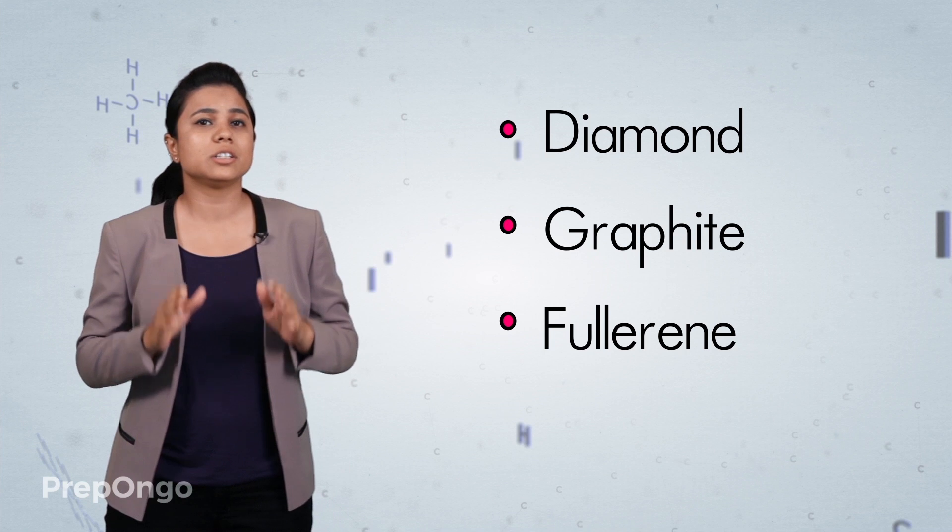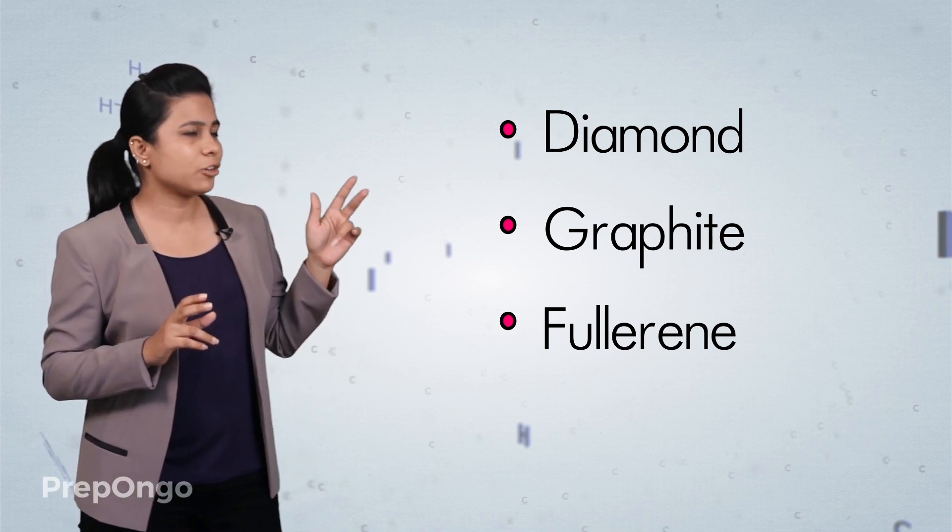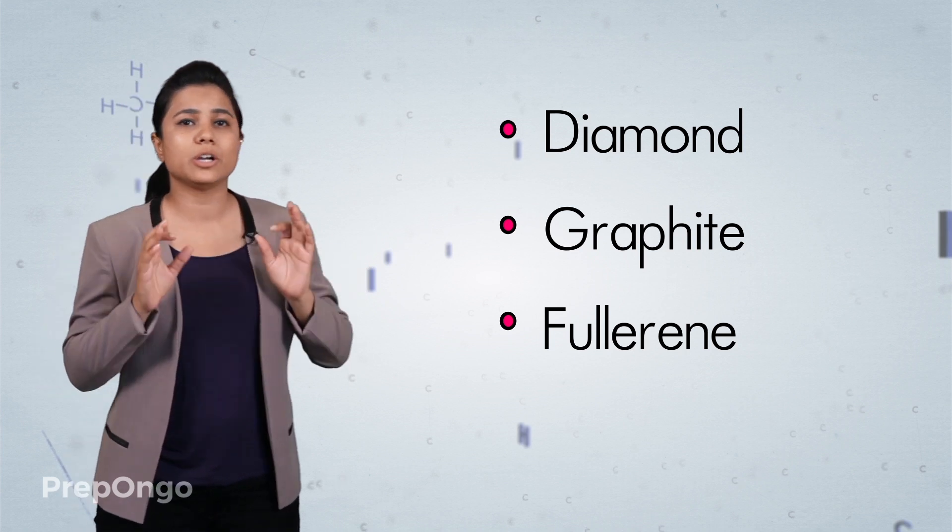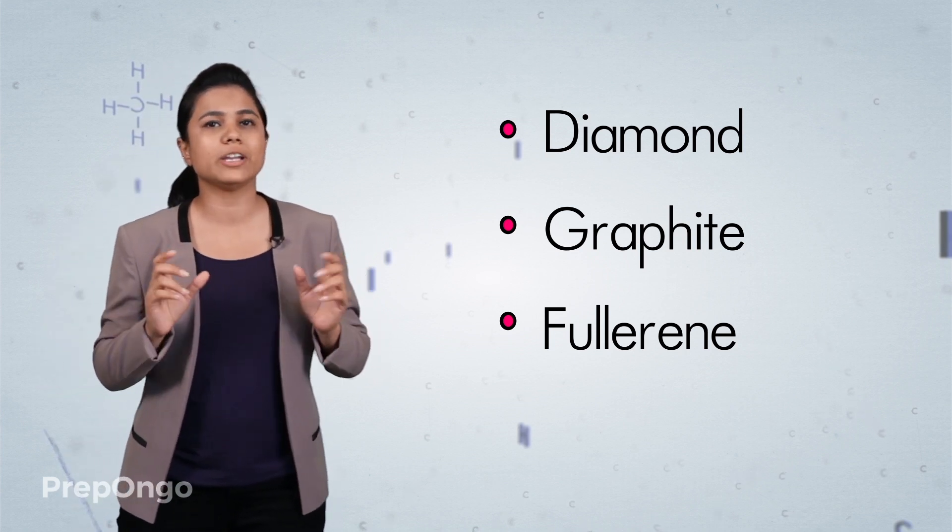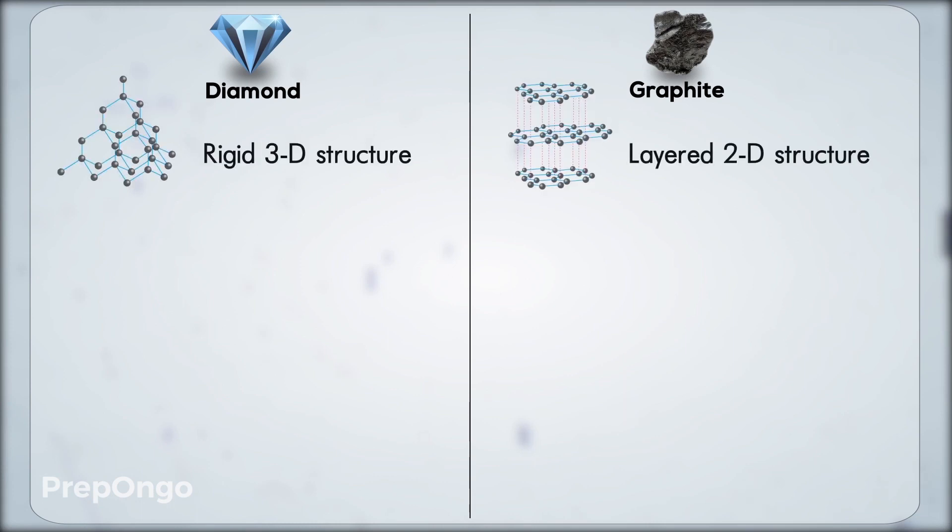So we are going to see the different allotropes one by one. The first two allotropes which are diamond and graphite we are going to understand them by drawing a difference table. Diamond has a rigid three-dimensional structure whereas graphite has two-dimensional sheet-like structure which lies one above the other.